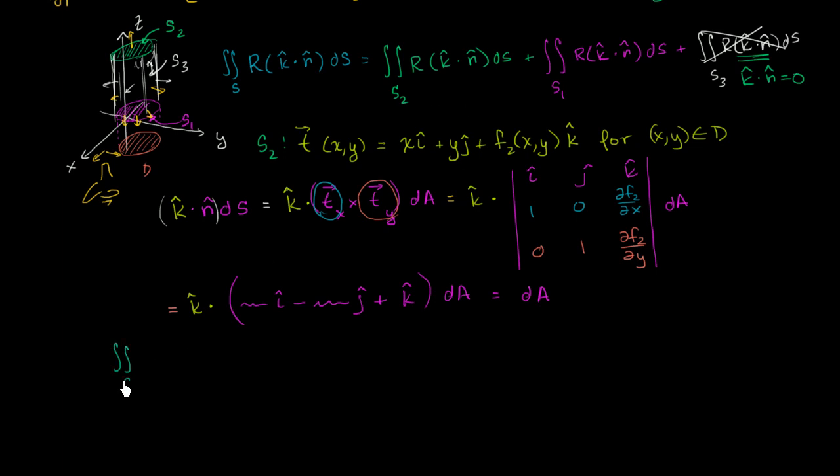So this surface integral, S2, and I'll even rewrite a little bit. S2, which is a function, r is a function of x, y, and z, times k dot n dS. I just rewrote all of this right up here.